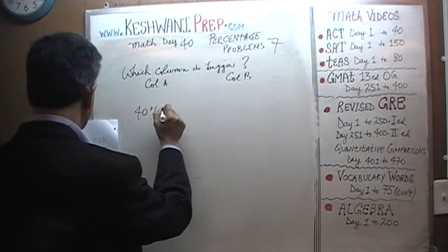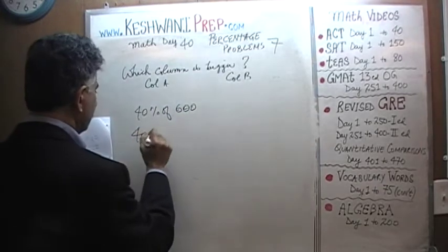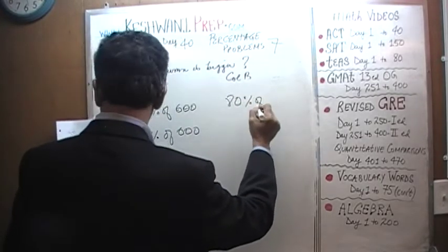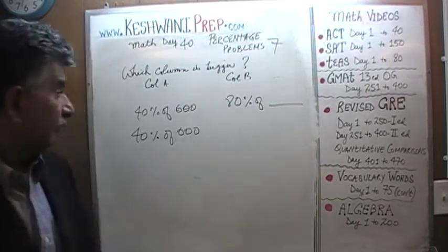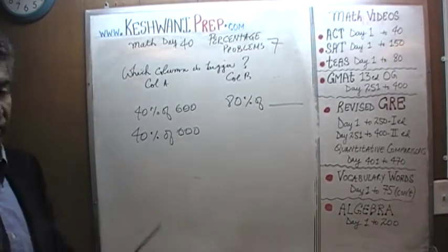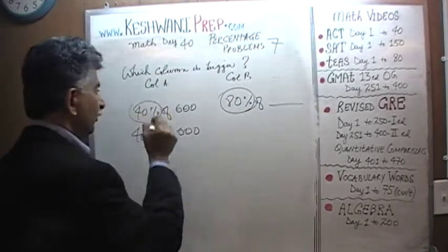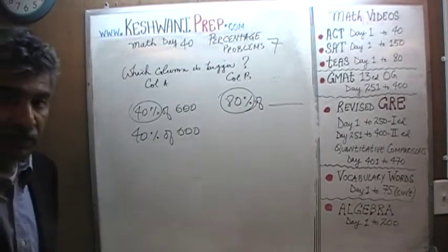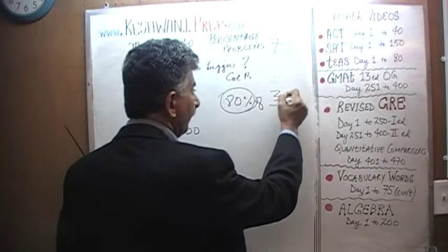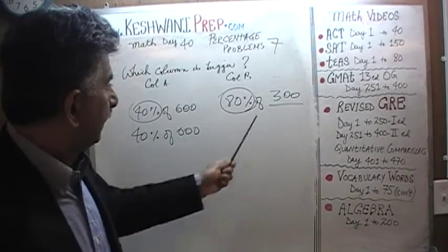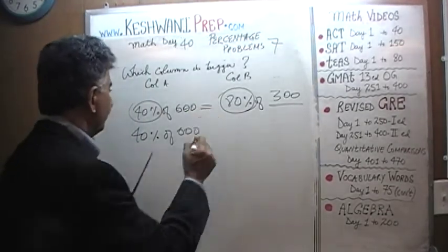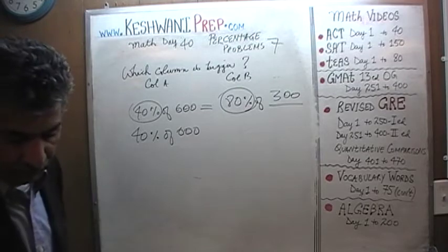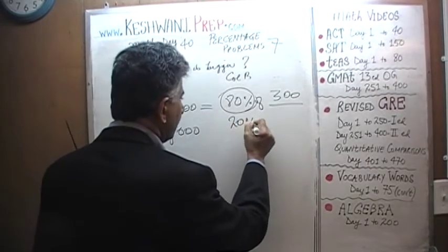40% of 600 versus 80% of what? 80% of what number is going to be equal to 40% of 600? Since this is 80% — twice the percentage as opposed to 40% — in order for these two quantities to be equal, we need half as much. Instead of 600 we need 300. So 80% of 300 is the same as 40% of 600. Now, 40% of 600 is going to be the same as 20% of what?